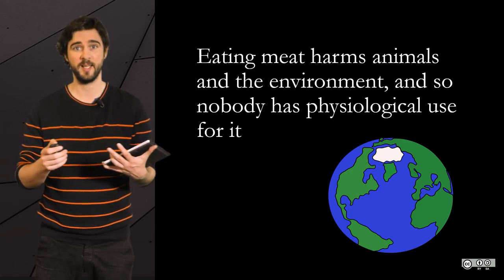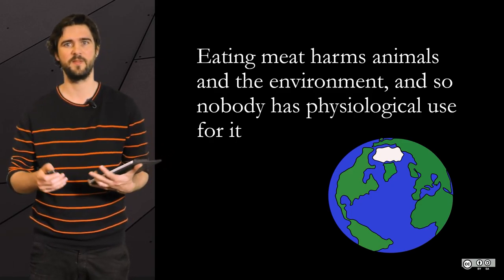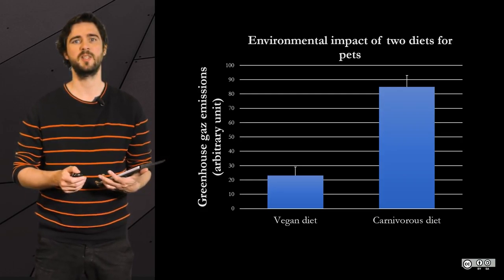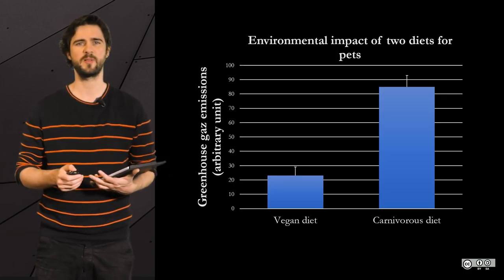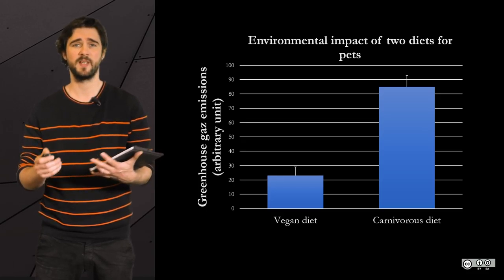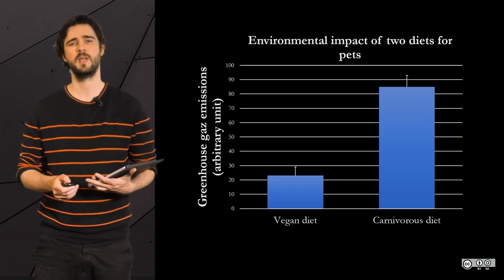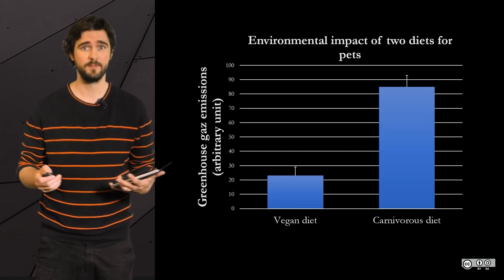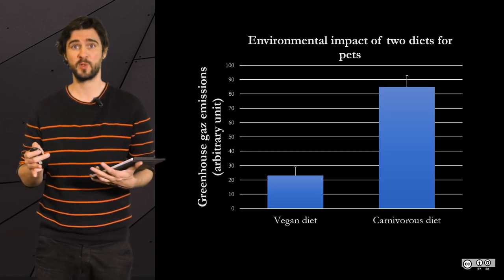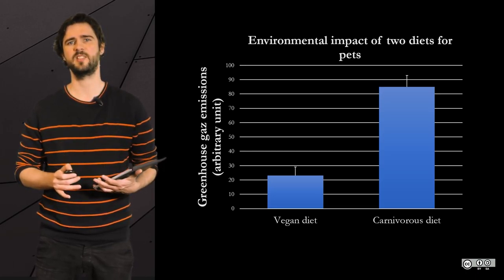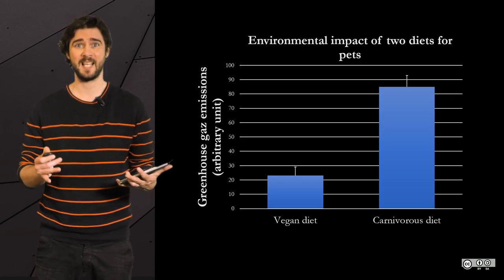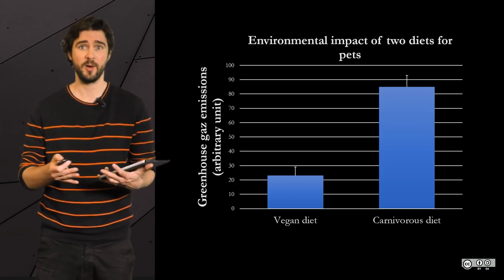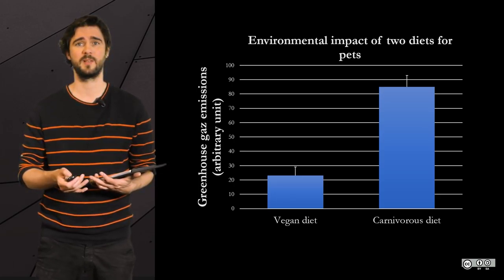Let me give you a couple of examples. Eating meat is bad for animals' well-being, obviously, and for the environment — and therefore, we have no physiological need for it. That is the kind of fallacy that people who feed their dogs and cats only with vegetables commit. One can easily imagine a way of using data to support such a fallacy, using the question of pets' diet. Let's compare the environmental impact of two diets for pets in terms of greenhouse gas emissions.